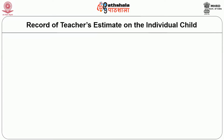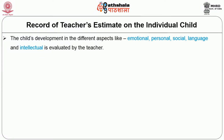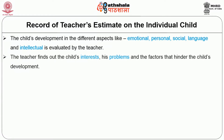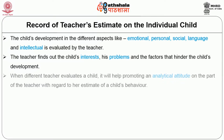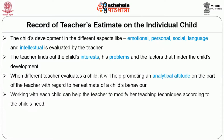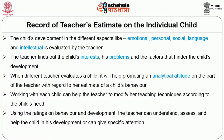The record of the teacher's estimate on the individual child involves finding out the child's development in school by looking at the child's interests, problems and the factors that hinder development. When a teacher evaluates a child, it promotes an analytical attitude on the part of the teacher. Working with each child can help the teacher to modify teaching techniques according to the child's need. Using the ratings on behaviour and development, the teacher can understand, assess and help the child in development.